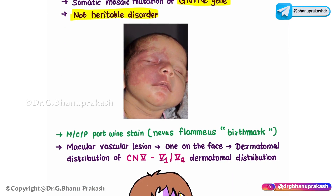A small portion of Sturge-Weber syndrome patients do not have neurological abnormalities. Neurological abnormalities are mainly associated with GNA11 pathogenic variants, which may result in milder disease than typical Sturge-Weber syndrome caused by GNAQ pathogenic variants. The most common presentation is the port wine stain, also known as nevus flammeus or birthmark, occurring in approximately 0.3% of newborn infants. However, only a small portion of children with port wine stain have Sturge-Weber syndrome.